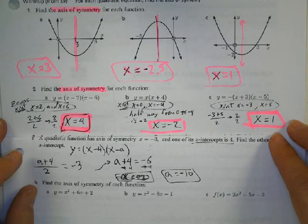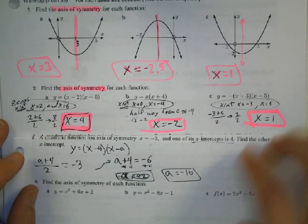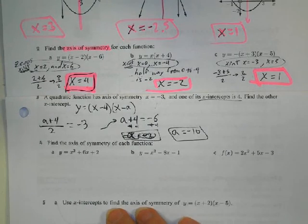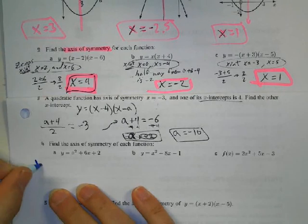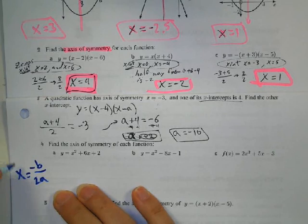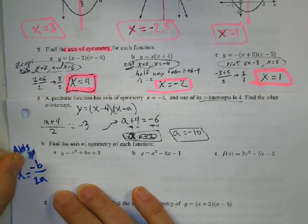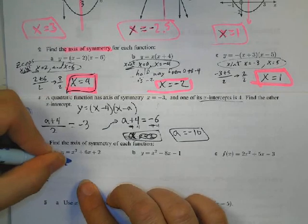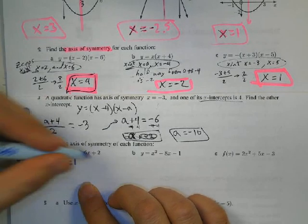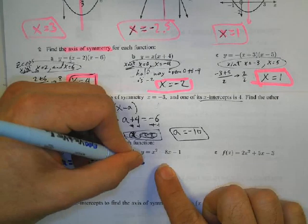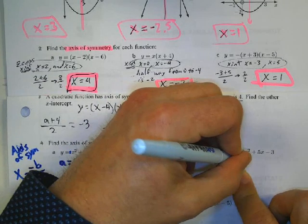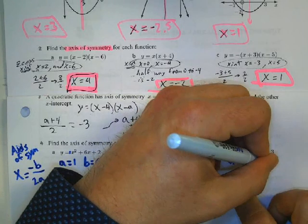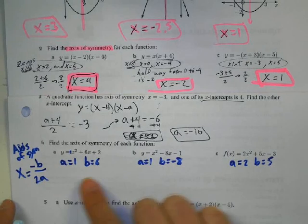Find the axis of symmetry for each function. An alternative way to figure out the axis of symmetry is using the equation negative b over 2a. In the first example, A equals 1 and B equals 6. In the second, A equals 1 and B equals negative 8. In the third, A equals 2 and B equals 5. Simply use this formula to find the axis of symmetry.